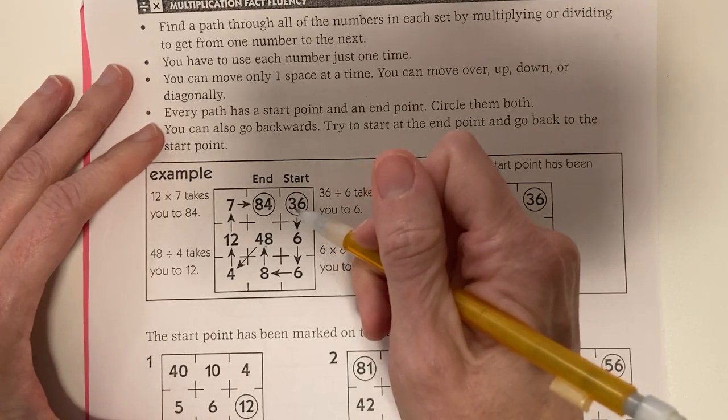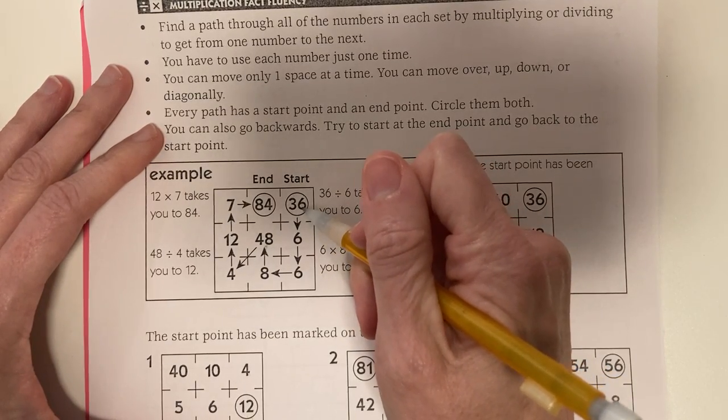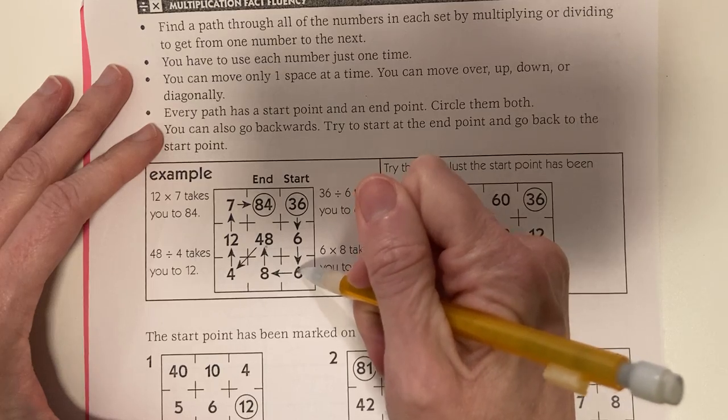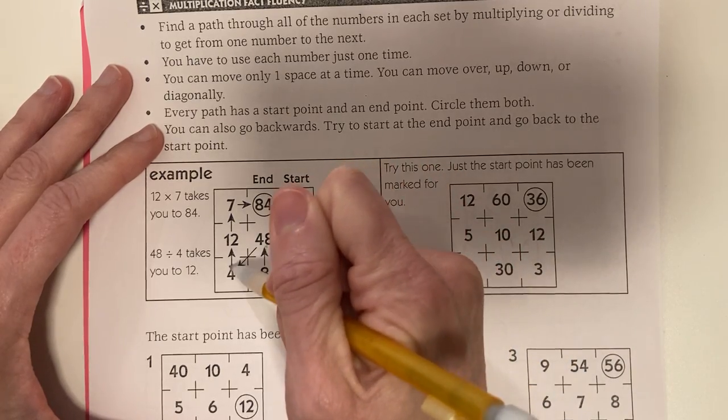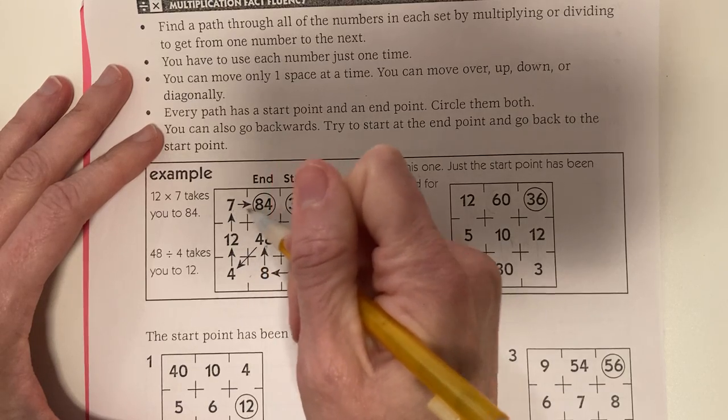Here's the example one. You start at 36. 36 divided by 6 is 6. 6 times 8 is 48. 48 divided by 4 is 12, and 12 times 7 is 84.